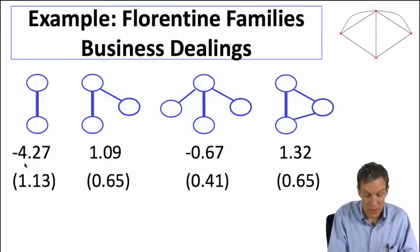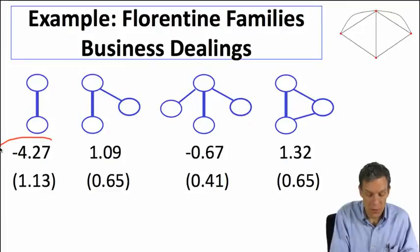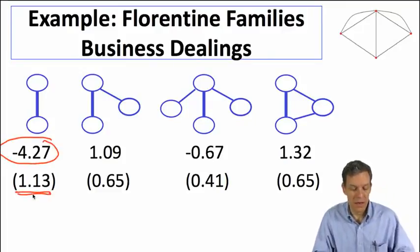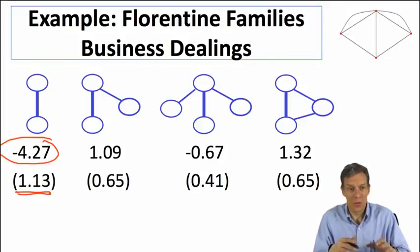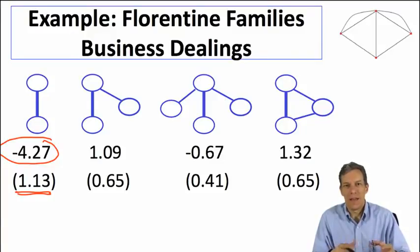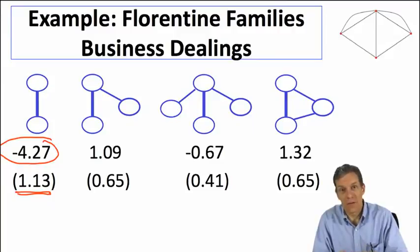So what did they find? Robbins et al. found that links minus 4.27, standard error of 1.13. So we're more than 3 standard deviations away, close to 4 standard deviations away. So this is statistically significant, negative. So what does it mean?